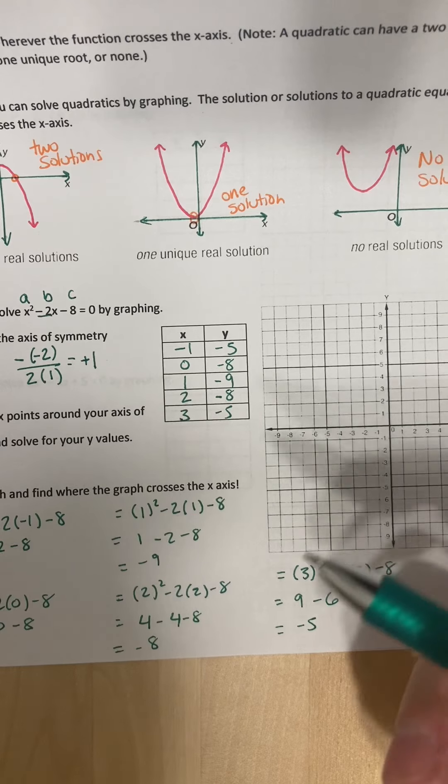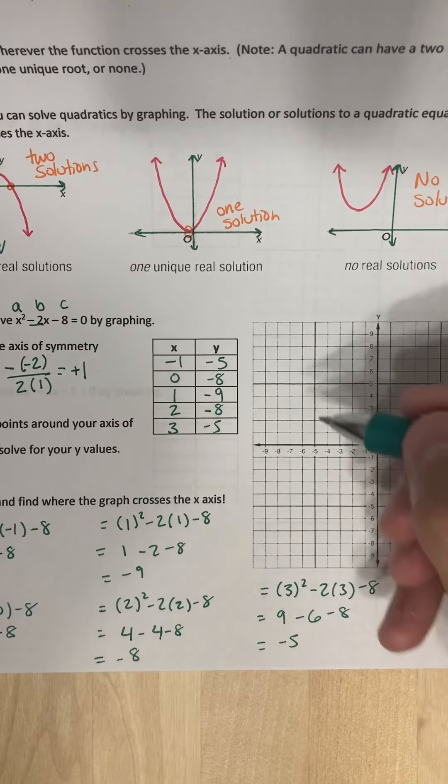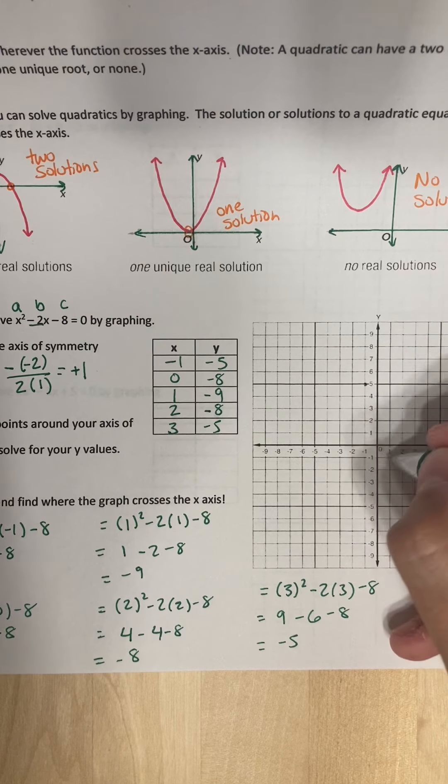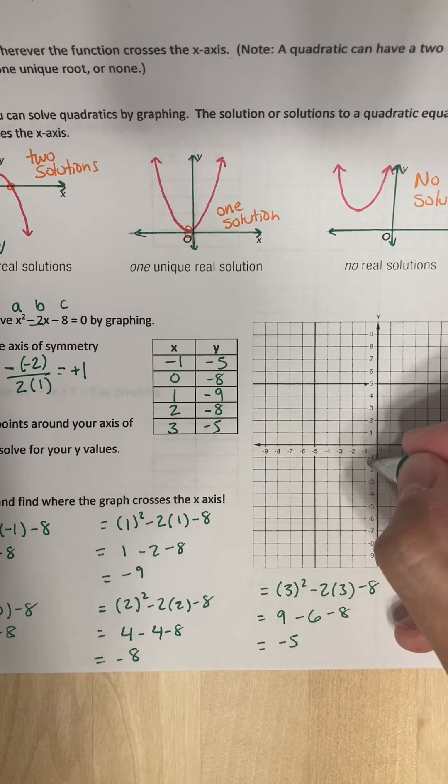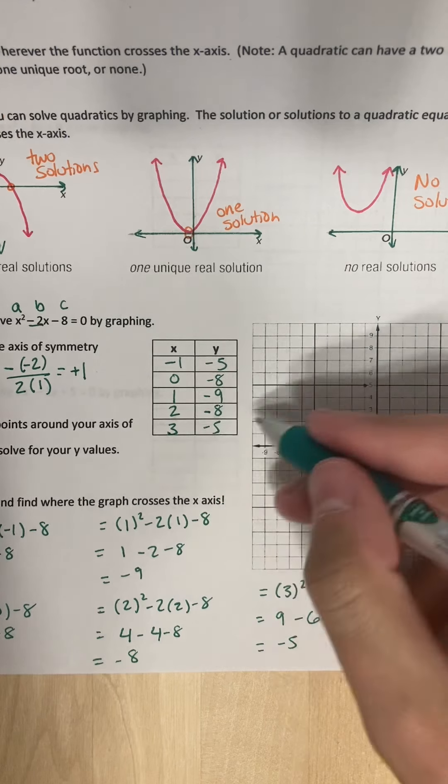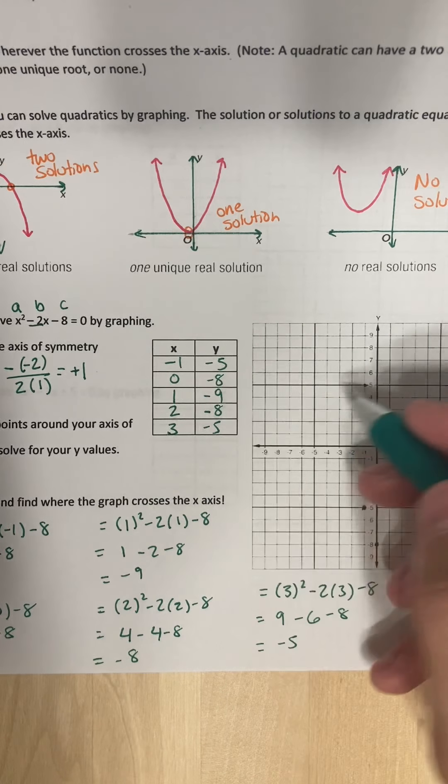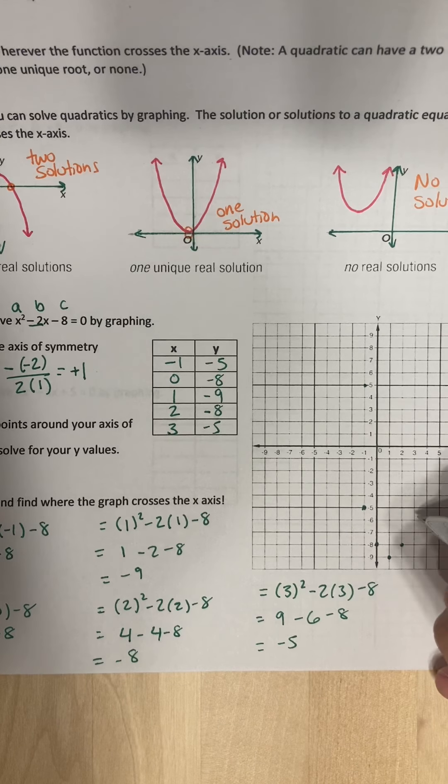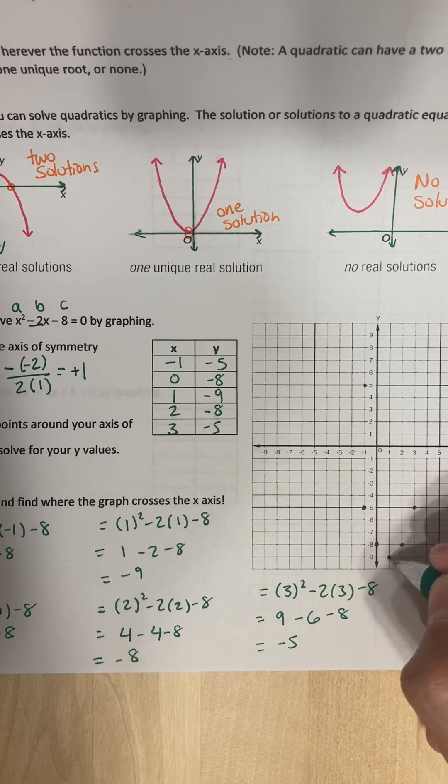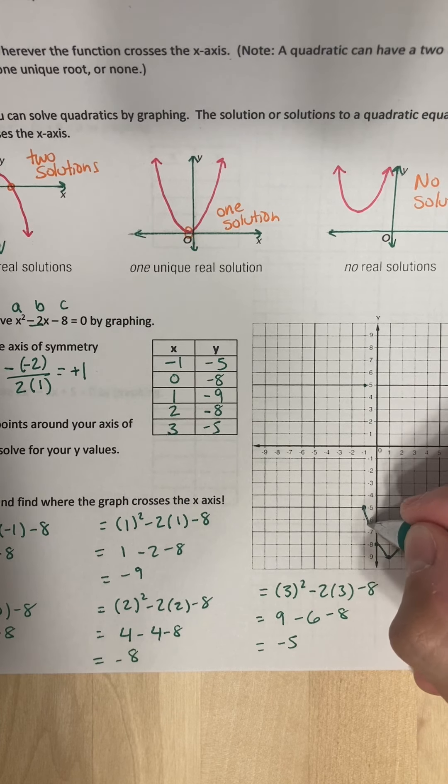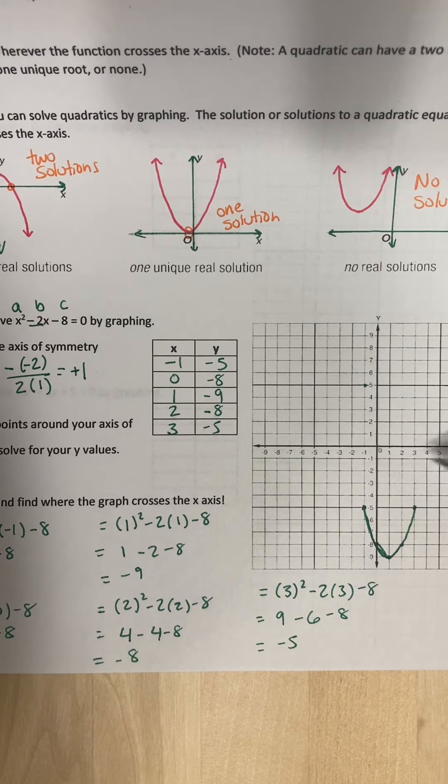All right. Let's go ahead and graph this and see what we get. Negative 1, negative 5. That's going to be down here. 0, negative 8. 1, negative 9. 2, negative 8. And 3, negative 5. And if you see, if I connect these right now, this is all I get so far. Make sure it's a U. This is all I get so far. I have a problem, though. It's not crossing the x-axis.